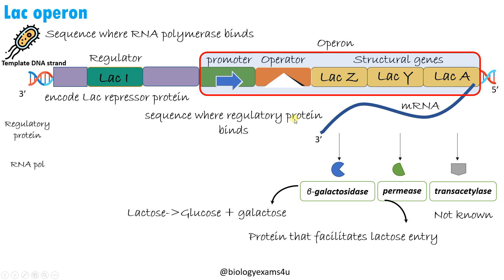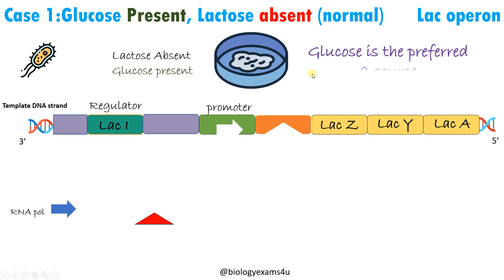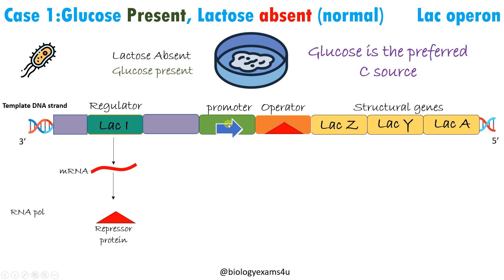Case one: glucose is present and lactose is absent. This is a normal condition. Prokaryotes like E. coli prefer glucose as the primary nutrient source; lactose is only used as an alternative if glucose is absent. So in the presence of glucose, the genes involved in lactose metabolism should be turned off. In this condition, RNA polymerase binds to the promoter, lac I is transcribed, forming the repressor protein, and this repressor protein binds to the operator sequence, inhibiting RNA polymerase movement.